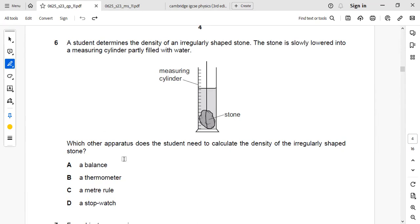So for finding the density, mass and volume is required. That is, density will be equal to mass divided by volume. This volume we have already measured with the help of this apparatus. Next we need to measure mass. So we can measure mass with the help of a balance.